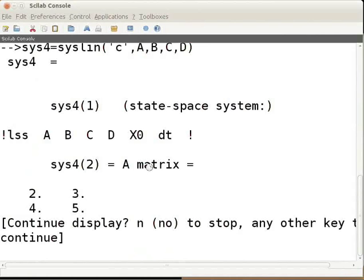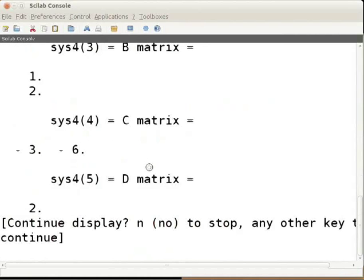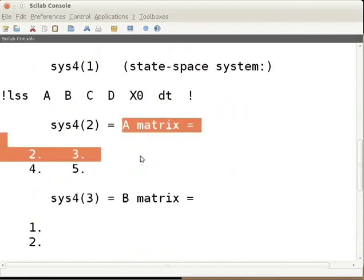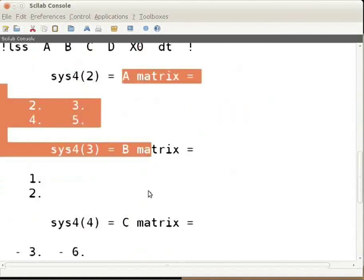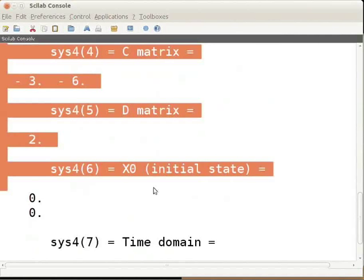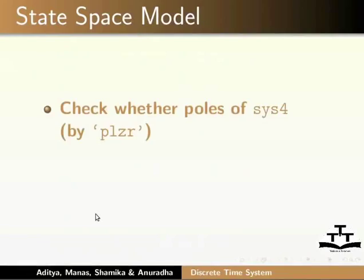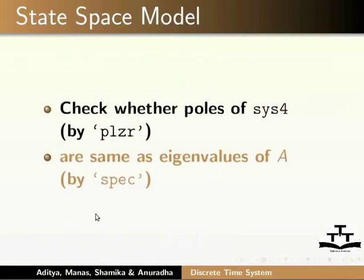Type sys4 = syslin('c', A, B, C, D) and press enter. You will get the following outputs. Press enter to continue the display. The output will have matrices A, B, C, D and the initial state x0. Check whether the poles of sys4 are saved as eigenvalues of A — use the plzr function and spec function for this.